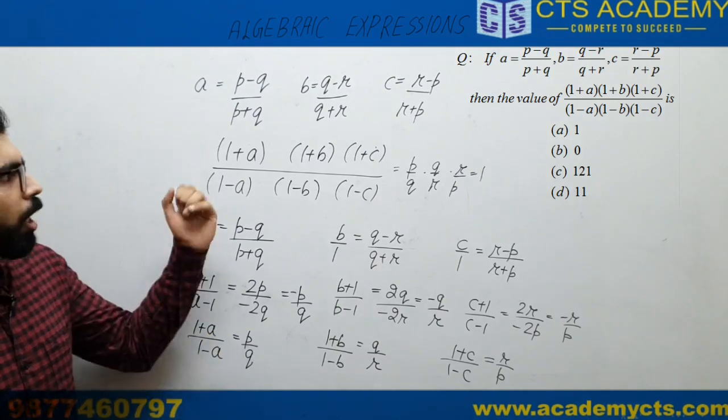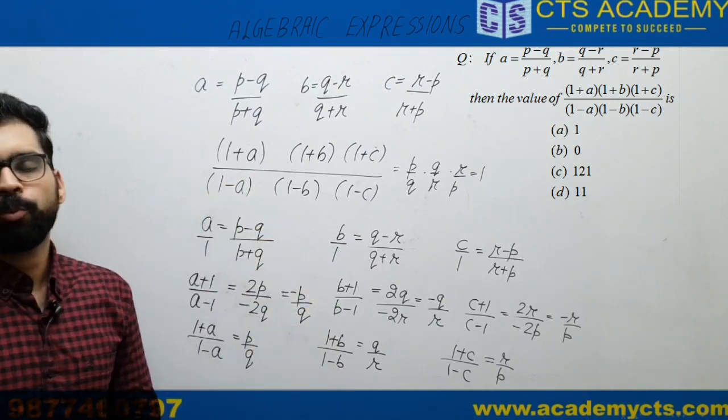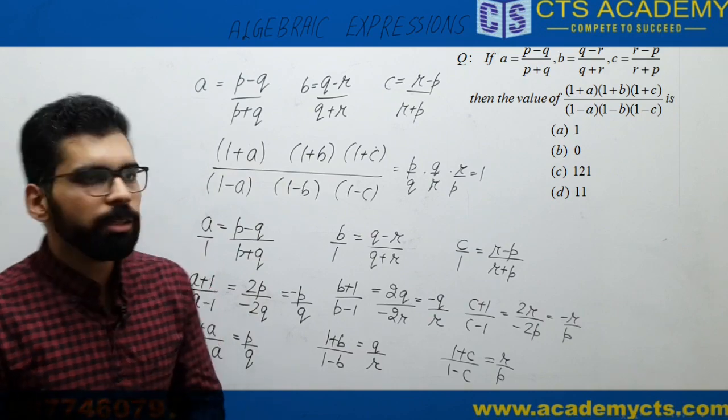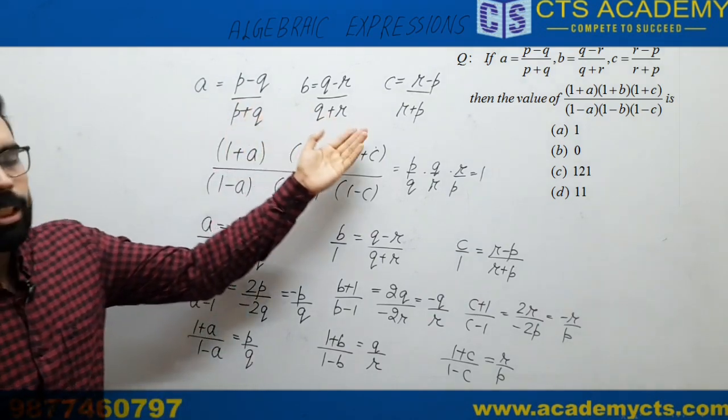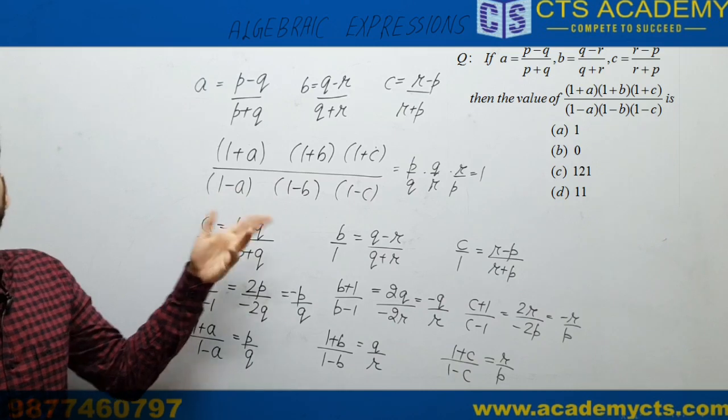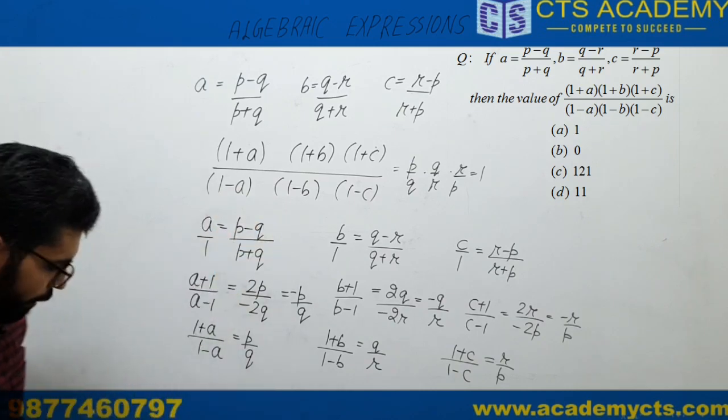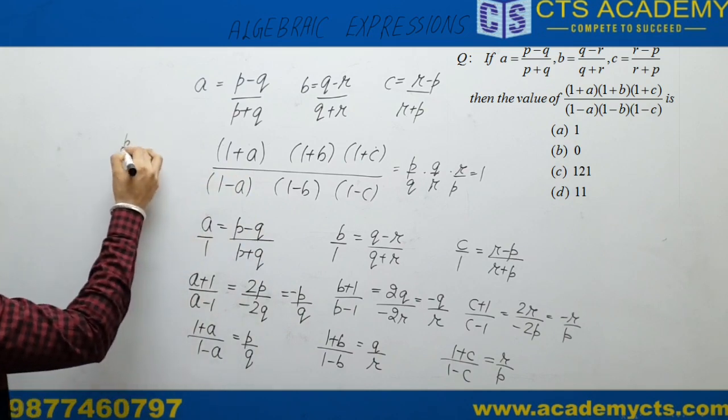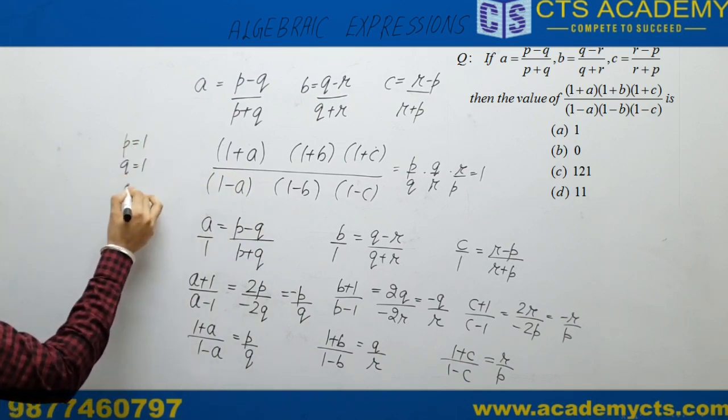A better thing is you don't follow this one either. We can crack this question within a second only. You are given A, B, C in terms of P, Q, R. Let us take the values. If I say, just take P = 1, Q = 1, and R = 1. Let us take all the values equal.